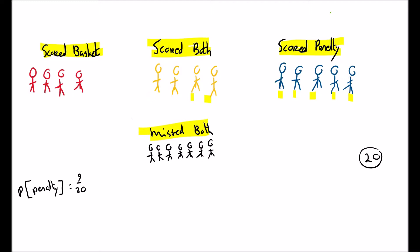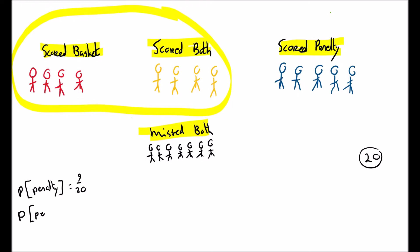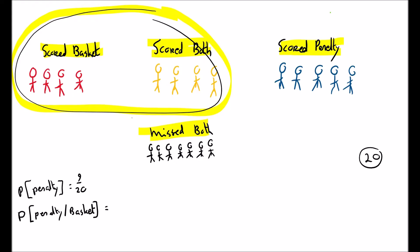Now, what if I just concentrate on the people who scored the basket? If I take those and look for the probability of choosing someone who scored a penalty — the probability of scoring a penalty given that they scored a basket — how many scored a basket altogether? Well, it's all in this circle: 8. And how many of those scored the penalty? These 4 people scored a penalty as well, which gives 4 over 8, and I'll express that in twentieths.